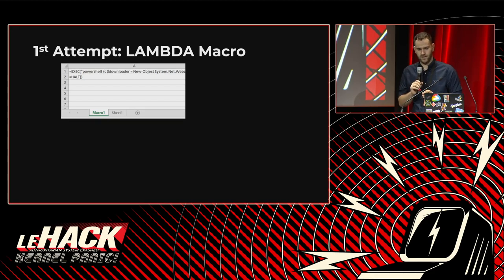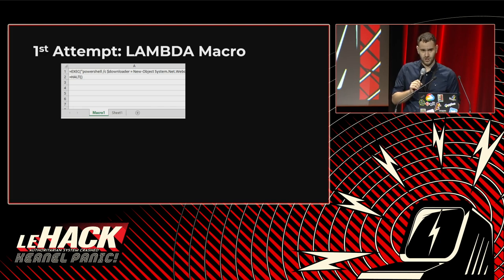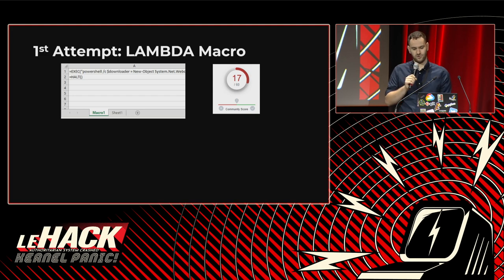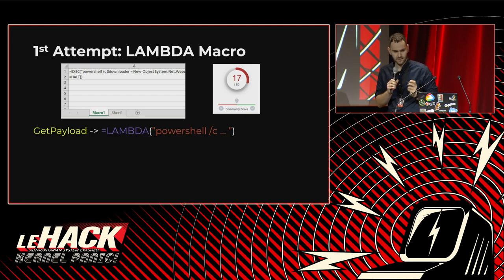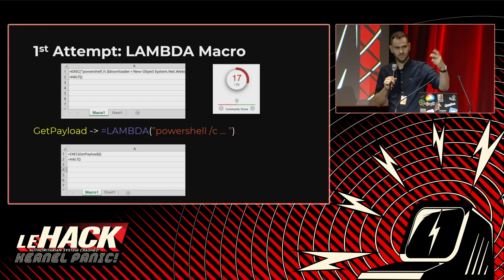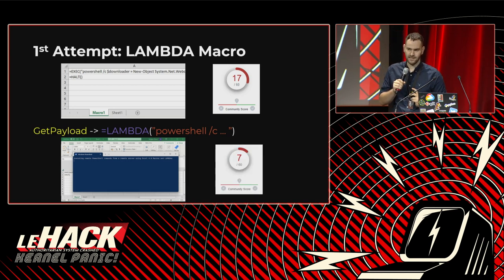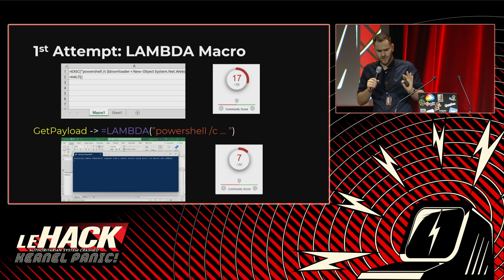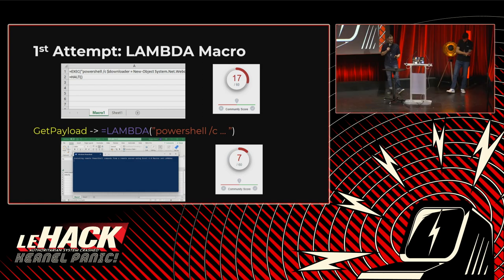I wondered whether I could incorporate Lambdas into the Excel 4.0 macrosheet. I constructed my first experiment: I wrote a simple Excel 4.0 macro that spawns a PowerShell process and executes commands from a remote server — uploaded to VirusTotal, resulting in 17 detections as the control group. Then I constructed a new Lambda that simply returns the hardcoded payload string. I modified my macro to substitute the hardcoded payload with a call to my Lambda. Uploaded the file to VirusTotal — resulting in 7 detections. By doing nothing more than substituting a hardcoded payload with a Lambda call, I fooled 10 highly respected anti-virus engines, simply because they could not handle Lambdas — a feature already publicly available for six months.